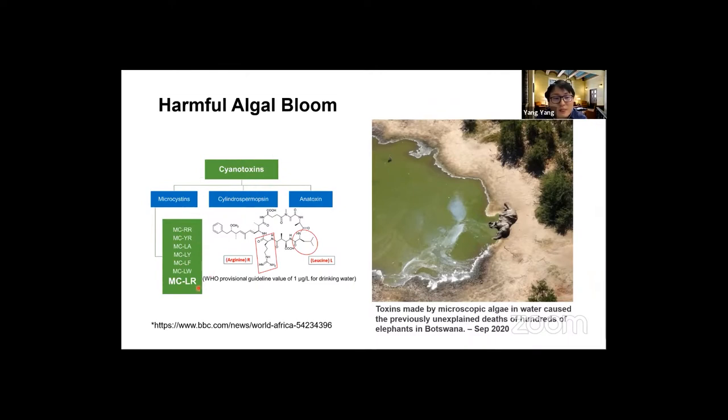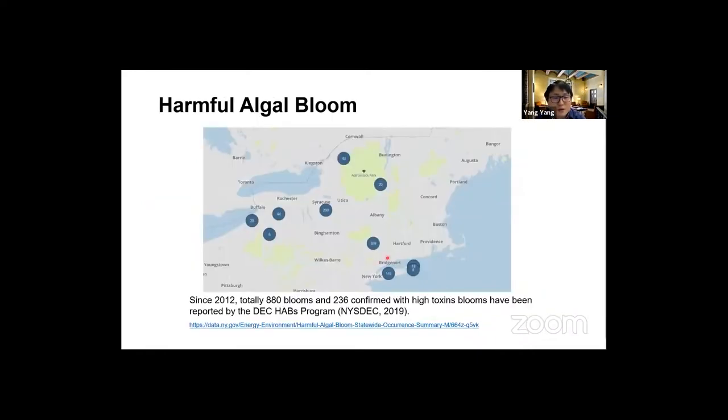Aside from that, when the algae is facing stress, for example overpopulation or lack of enough nutrients for them to grow further, they will be very unhappy. When they are annoyed, they will create a group of chemicals called cyanotoxins. A recent report just happened several months ago this year saying that elephants in Africa were killed by these cyanotoxins. These are very toxic chemicals.